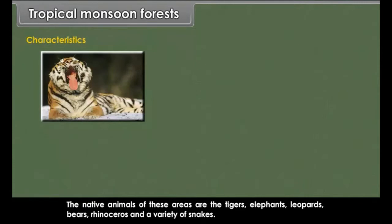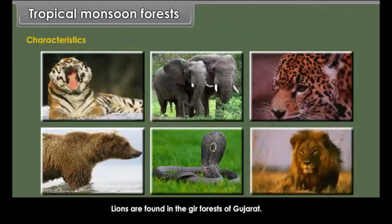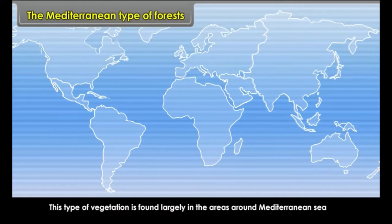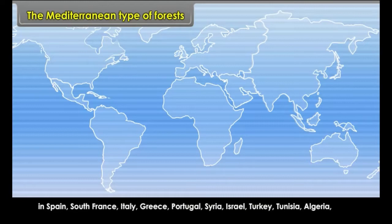Lions are found in the Gir forests of Gujarat. The Mediterranean type of forest is found largely in areas around the Mediterranean Sea in Spain, South France, Italy, Greece, Portugal, Syria, Israel, Turkey, Tunisia, Algeria, Morocco, California, Central Chile, etc.